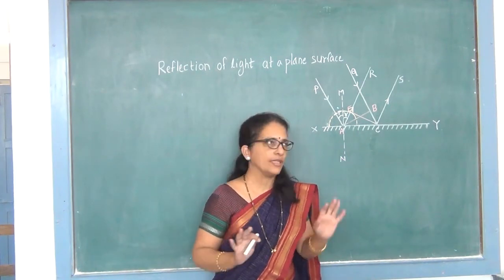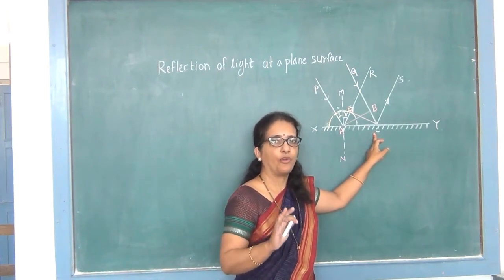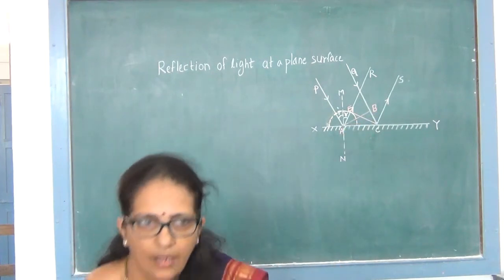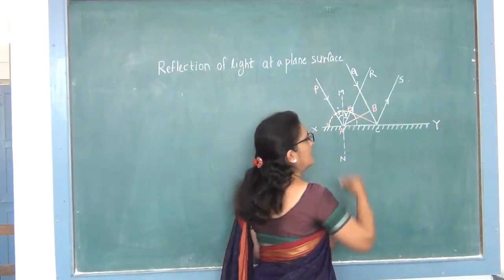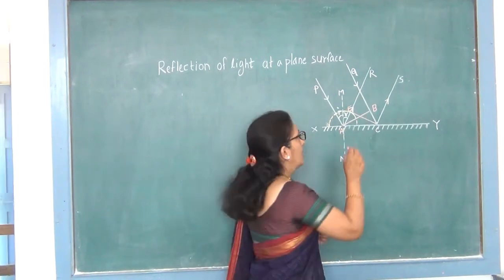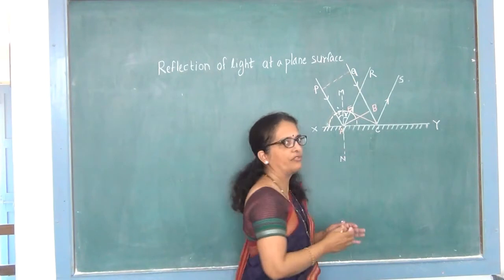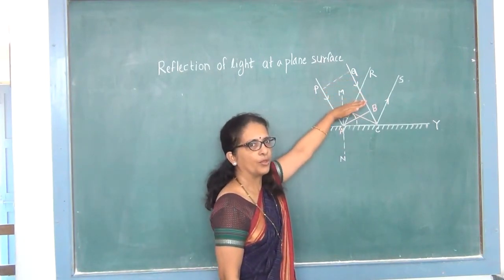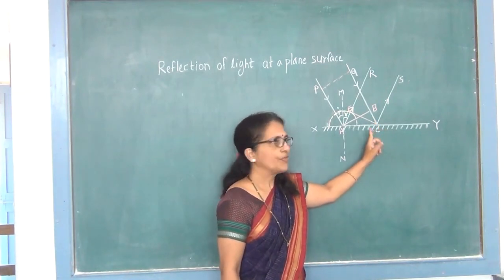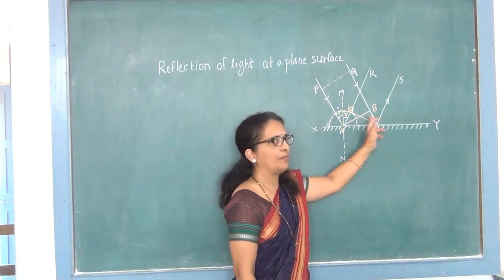If PA and QC are the rays, then how can we draw the wavefront? By applying the perpendicular, AB is the wavefront. We must say that a plane wavefront AB is incident. The plane wavefront is bounded by two rays PA and QC. So PA and QC are the rays which are incident, bounded by wavefront AB.